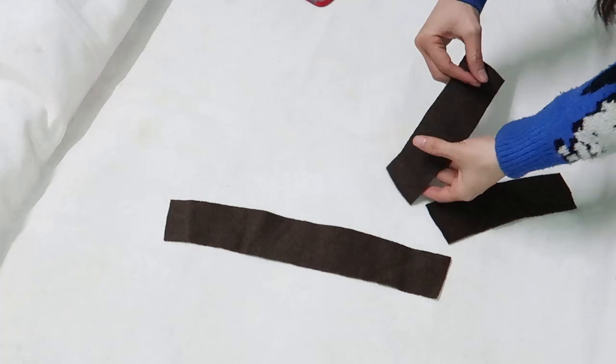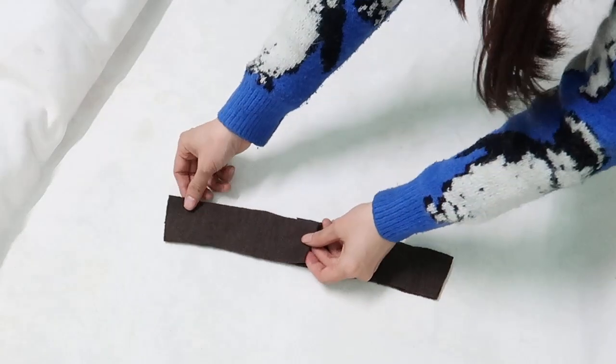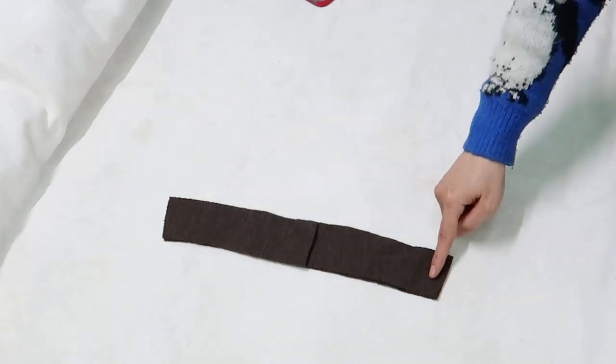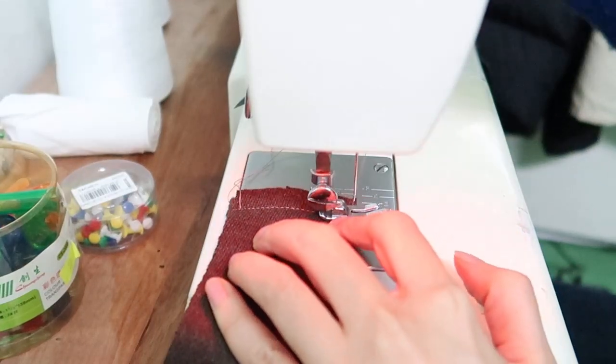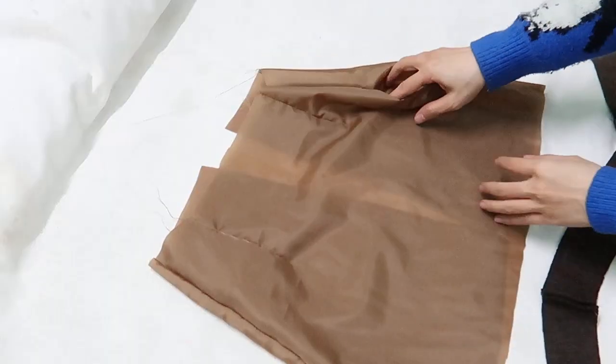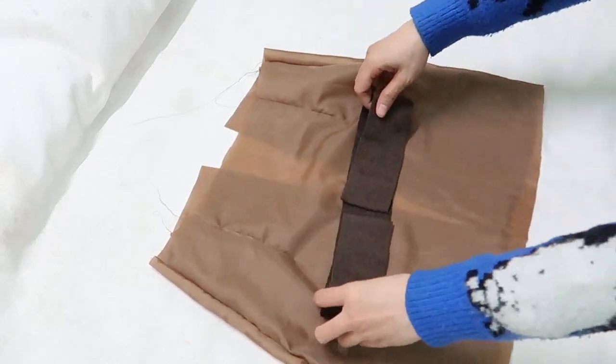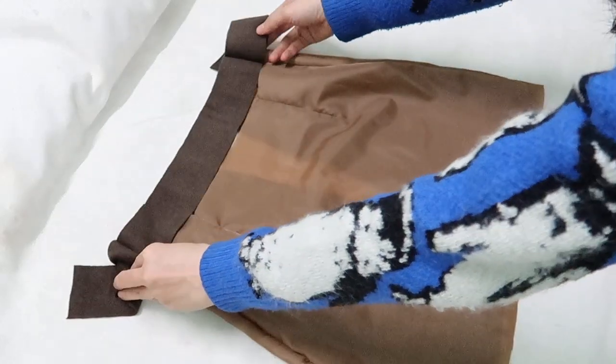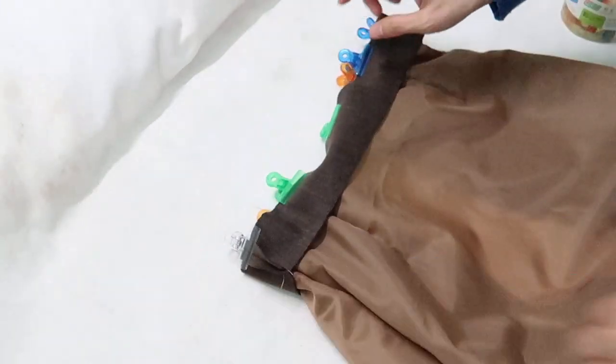For the waistband, I also connect both sides together. Now, I pin the waistband into the lining skirt and stitch them together.